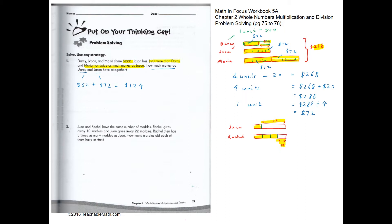Looking at the difference: the difference between Rachel's and John's remaining marbles is two units. And that difference equals 22 minus 10, which is 12. So one unit equals 6. Rachel originally had 6 plus 6 plus 6 plus 6 plus 10, which is 28 marbles. John also had 28 marbles at the start since they both started with the same number.